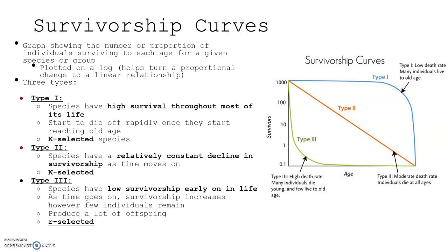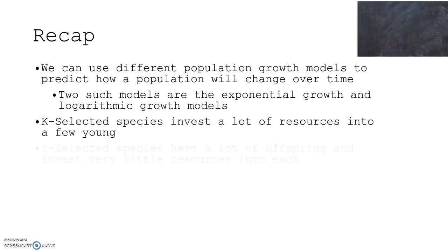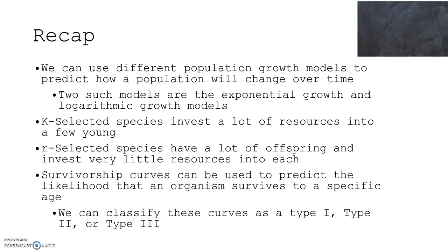To recap: we can use different population growth models to predict how a population will change over time. Two such models are the exponential growth and the logistic growth models. K-selected species invest a lot of resources into a few young; R-selected species have a lot of offspring and invest very little resources into each. Survivorship curves can be used to predict the likelihood an organism survives to a specific age, and we classify these curves as Type 1, Type 2, or Type 3.